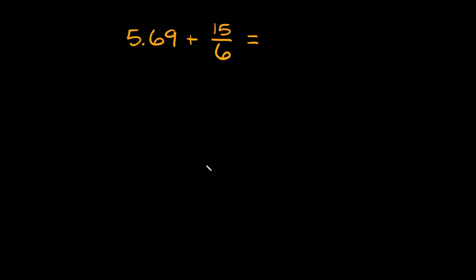So, the trick to this is either turning both of these numbers into decimals or turning them both into fractions. And it's actually normally easier to just turn them both into decimals. Alright, so here, 5.69, this is already a decimal. So all we have to do is turn this fraction into a decimal.